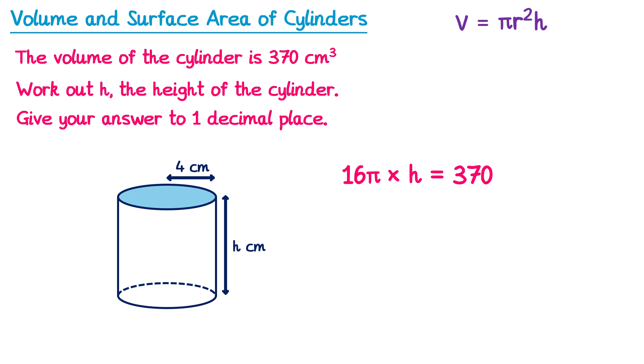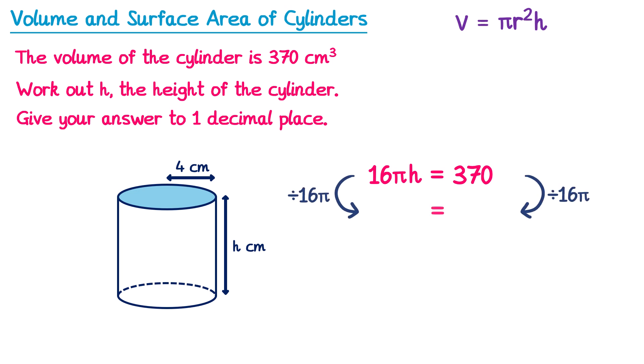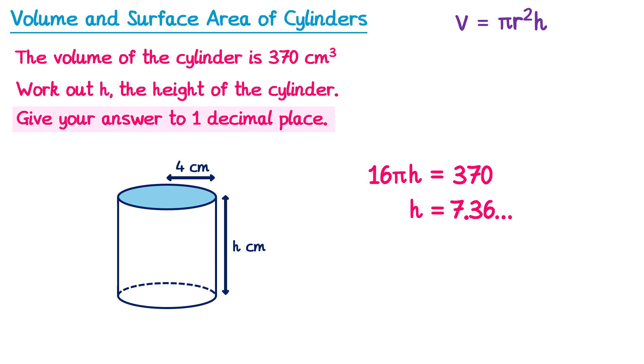If you multiply 16π and h together, you get 16πh. To find the value of h, we can divide both sides by 16π. On the left-hand side the 16π's cancel, so we're left with h. On the right-hand side, we need to do 370 divided by 16π, which you can do on your calculator and it will give you 7.36 and so on. This question said to give your answer to one decimal place, so we'd round this off to 7.4.